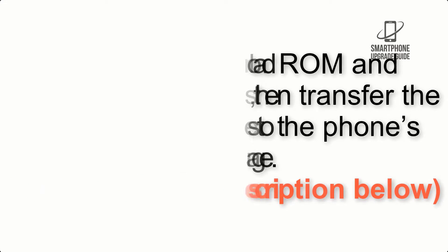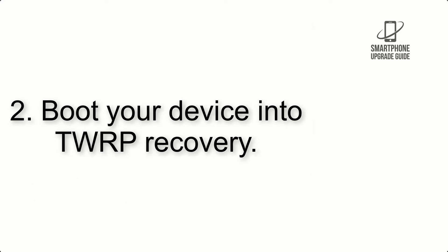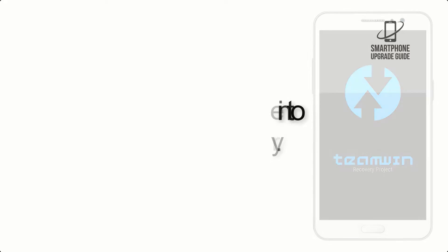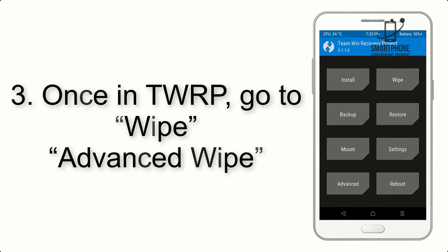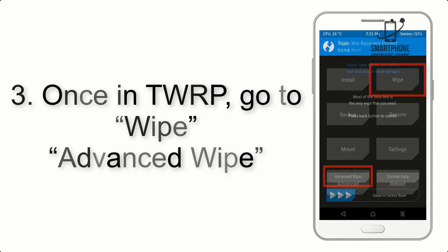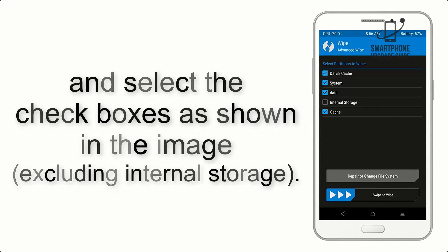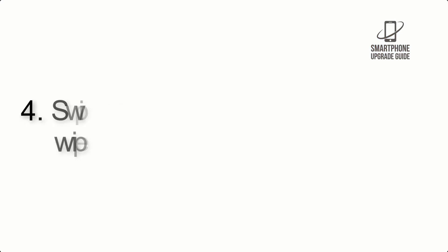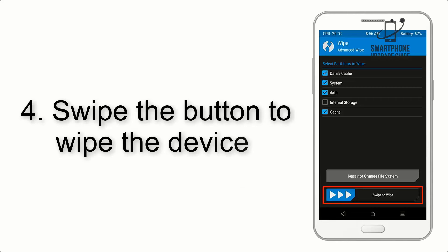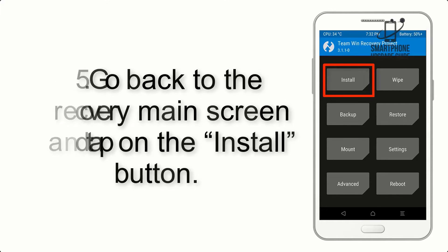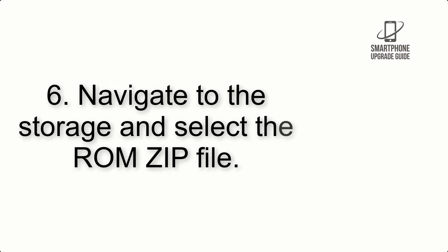Step 2: Boot your device into TWRP recovery. Once in TWRP, click on Advanced Wipe and select the checkboxes as shown in the image, excluding internal storage. Step 4: Swipe the button to wipe the device.